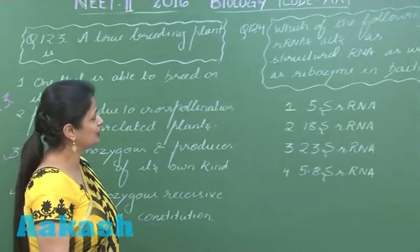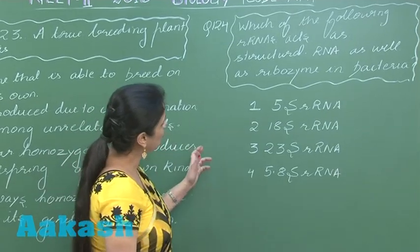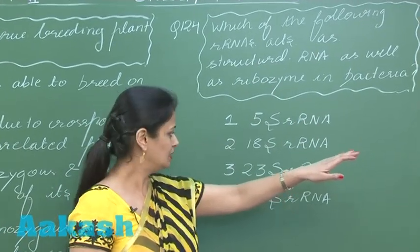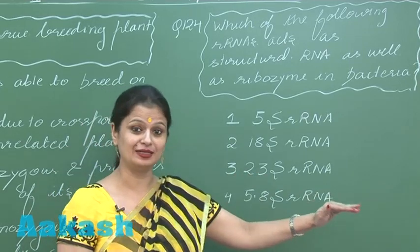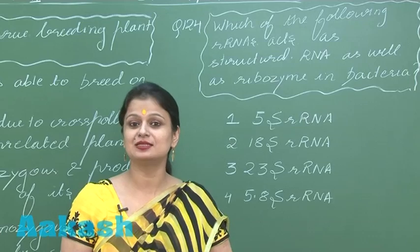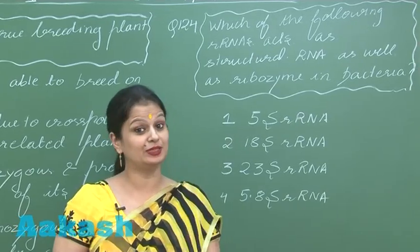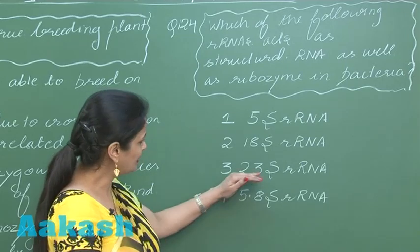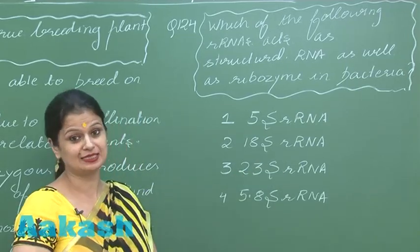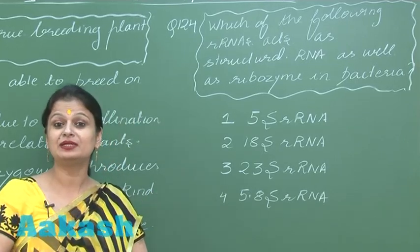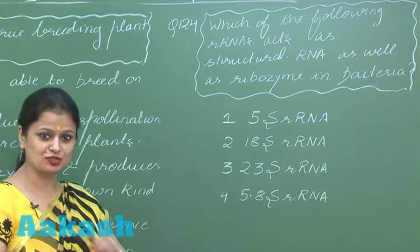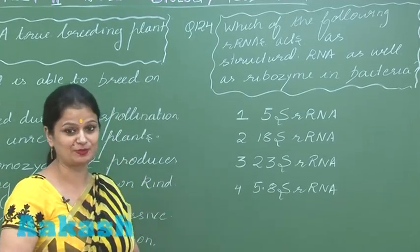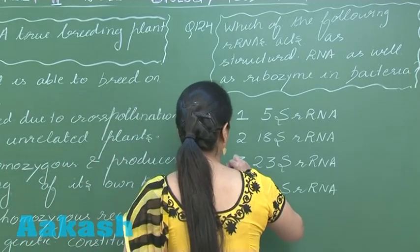Question 124: we need to find the ribosomal RNA which has both structural and catalytic roles. The 23S ribosomal RNA is part of the larger 50S subunit present in the 70S ribosome. It is catalytic in nature, being involved in the formation of peptide bonds between amino acids. Its structural role comes from being part of the ribosome, and its catalytic role from peptide bond synthesis. So the right option is option number 3.